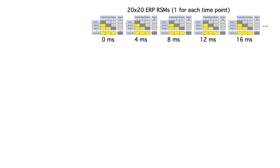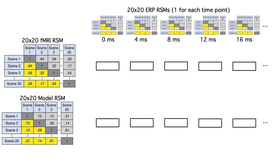We have an RSM at time 0, which is the onset of the stimulus, then one at 4 ms after stimulus onset, 8 ms after, and so on for several hundred milliseconds, depending on the epoch length used during averaging. The RSMs during the period immediately following stimulus onset will be noise, because information about the stimulus hasn't reached the cortex yet. For a visual stimulus, the RSMs will start being structured around 50 to 70 ms after stimulus onset. Each cell in these RSMs is just the correlation between the ERP scalp distributions for a pair of scenes at that time point. We can then correlate the RSM at each time point with the RSM for the fMRI data or the neural network model using a rank-order correlation.